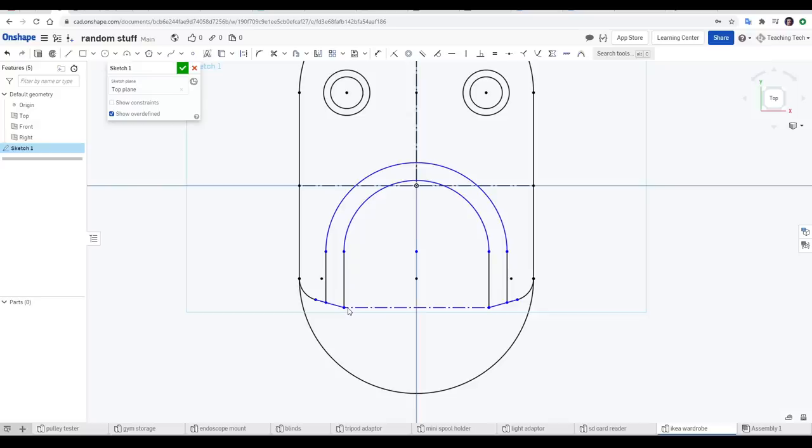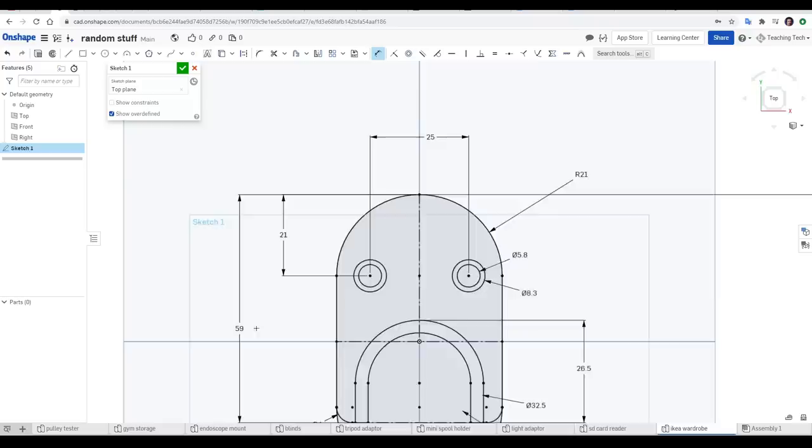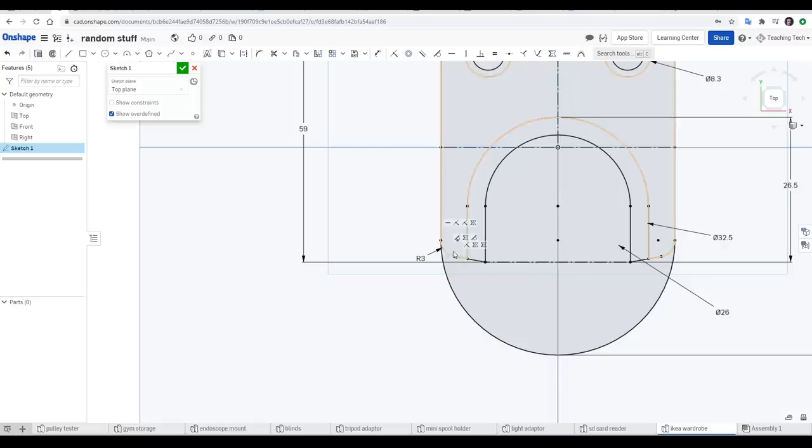As long as we have our critical dimensions, and those that we can measure easily with the calipers, our final shape should have the desired accuracy. One final tweak of that radius, and everything matches real life.